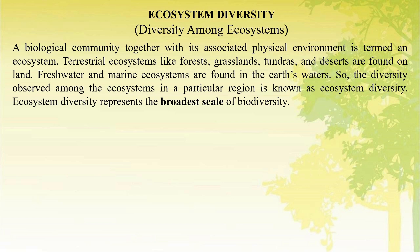Further, civilizations located near water bodies tend to support greater species diversity compared to areas further from water sources. A biological community together with its associated physical environment is termed an ecosystem. Terrestrial ecosystems like forest, grassland, tundra, and desert are found on the land. Fresh water and marine ecosystems are found in the earth's water. The diversity observed among ecosystems in a particular region is known as ecosystem diversity.